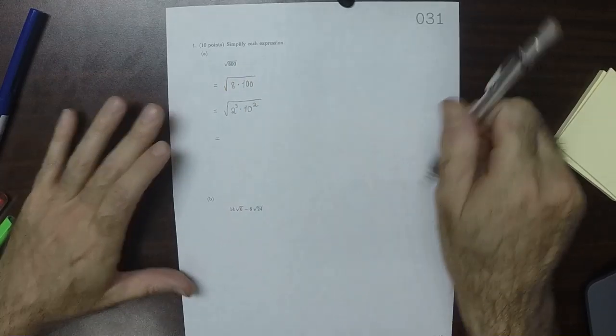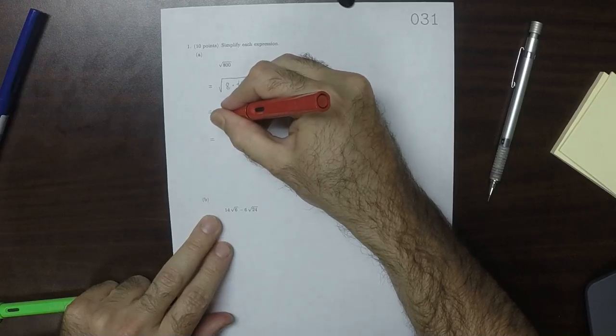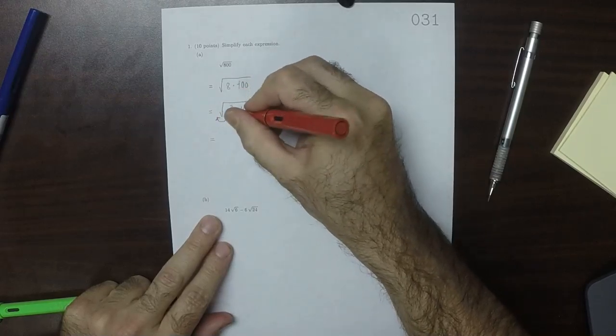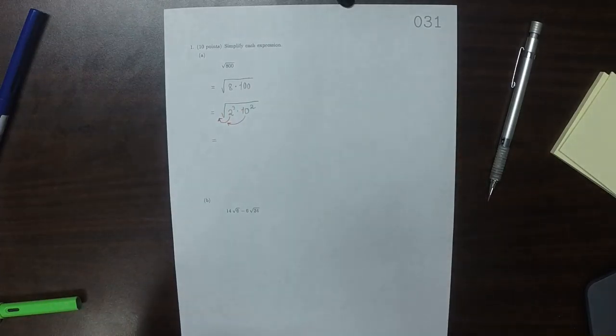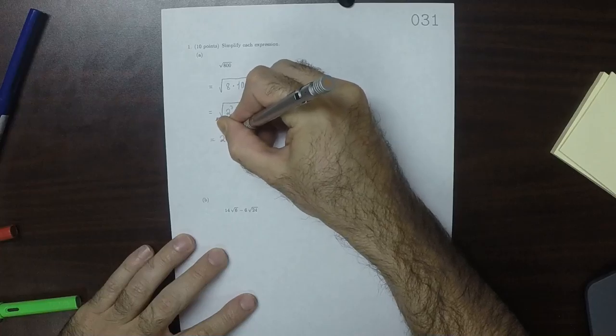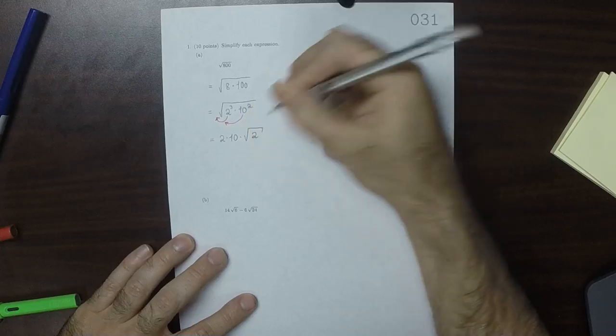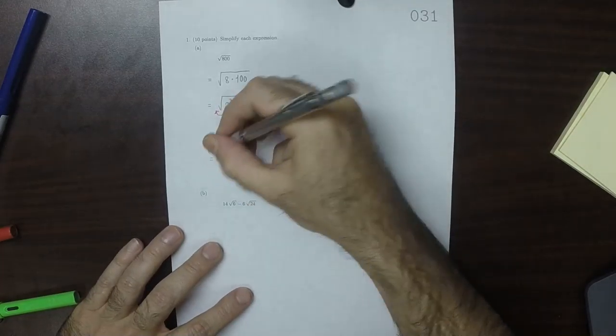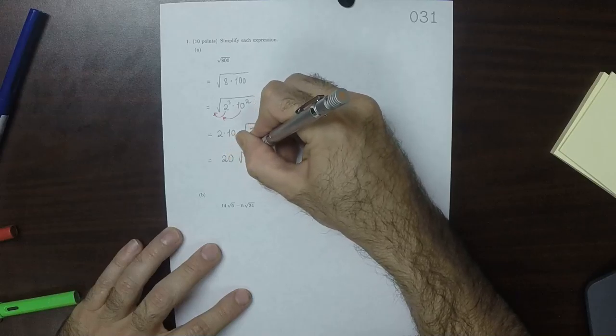So two of these will be able to come out, leaving one behind. And both of these will be able to come out. So that would be 2 multiplied by 10 multiplied by the square root of 2, because that one 2 was left inside. So that would be 20 square root of 2.